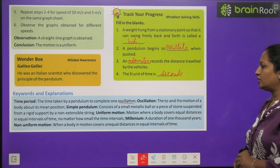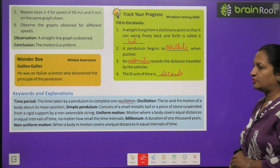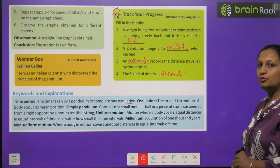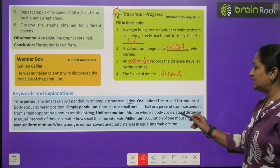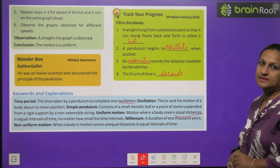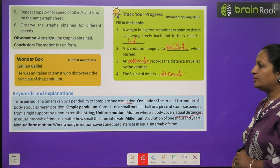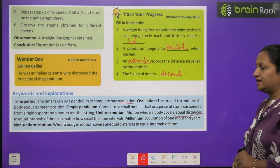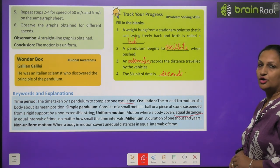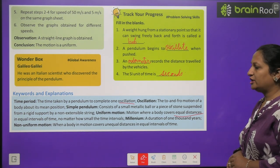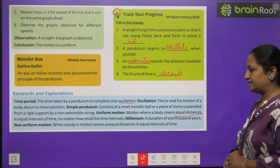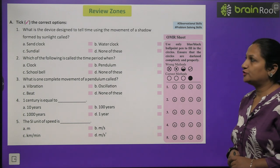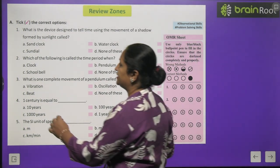An oscillation is the to-and-fro motion of a body about its mean position. A simple pendulum consists of a small metallic ball or a piece of stone suspended from a rigid support by a non-extensible string. Uniform motion is when a body covers equal distance in equal intervals of time, no matter how small the time interval. A millennium is a duration of 1000 years. Non-uniform motion is when a body covers unequal distances in equal intervals of time.